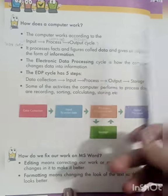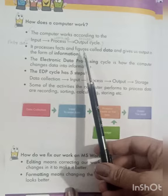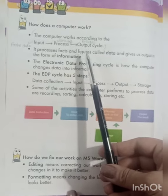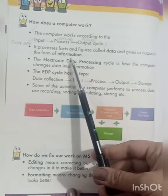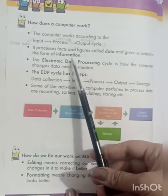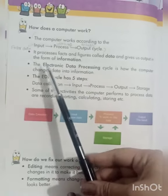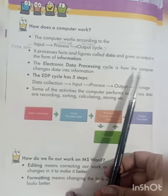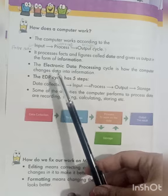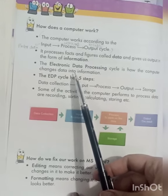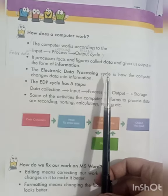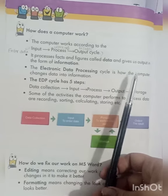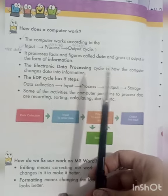And it gives us output in the form of information. The Electronic Data Processing Cycle is how the computer changes data into information.